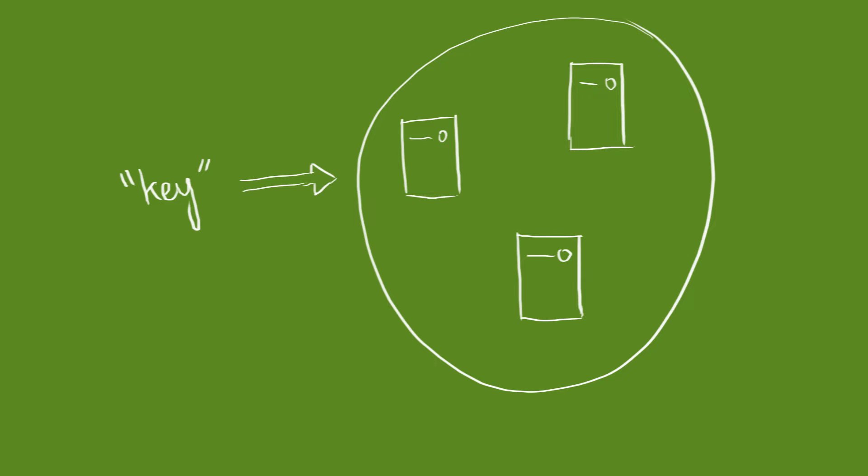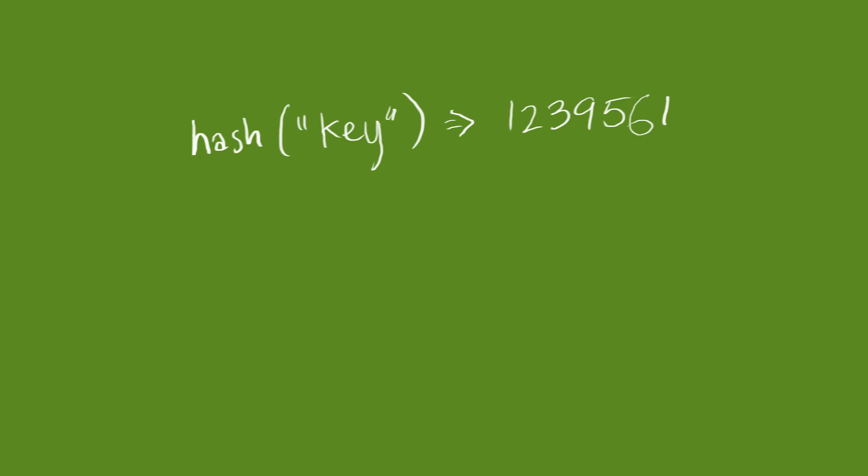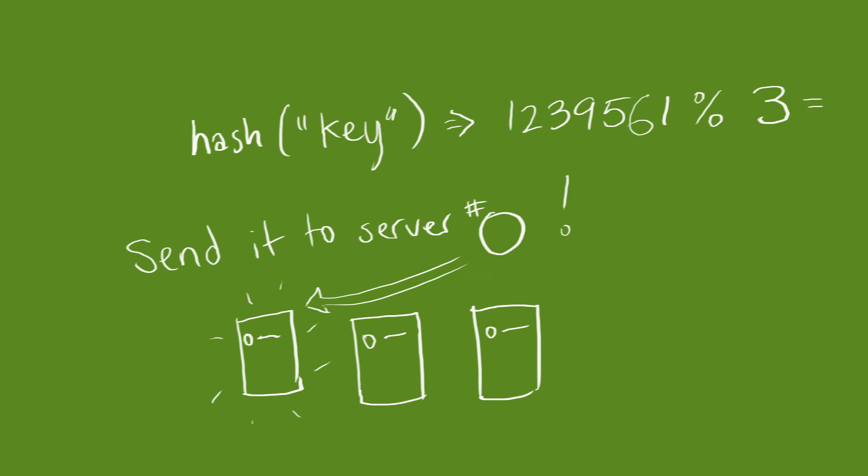When a key request comes in, the first thing I need to decide is which server should I look for this key on. One way to do this: we could run the key through a hash function, modded by the number of servers, and based on the result, send the request to that server for processing.